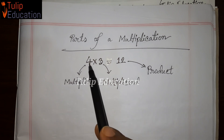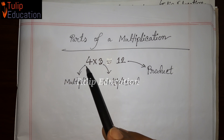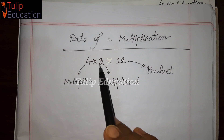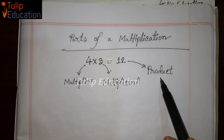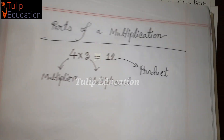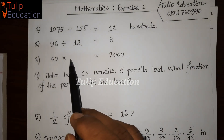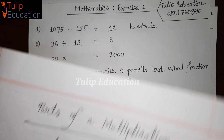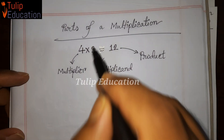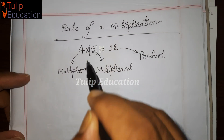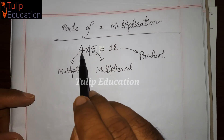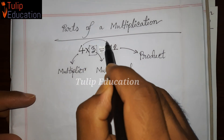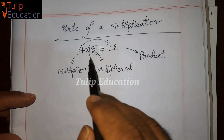We have 4 as the multiplier and the result is the product. So the number is 60 and we get 3000. We multiply the number 12. Ultimately, we divide the product by the multiplier, so we divide the product by 3.